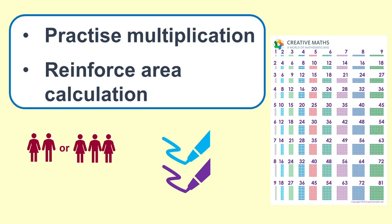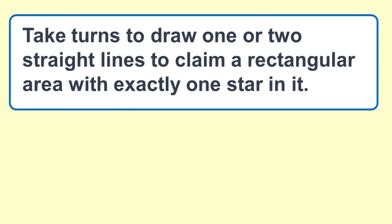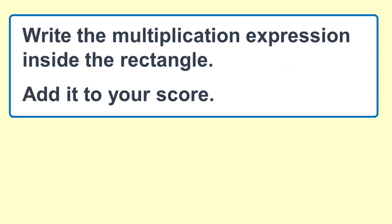The board for this game is an 11 by 11 grid containing 12 stars and you just make them up. With the grid the players take turns to draw one or two straight lines to claim a rectangular area with exactly one star in it. So you can't have no stars, you can't have more than one star.